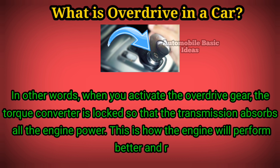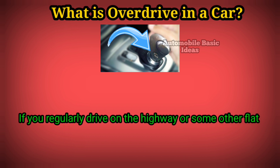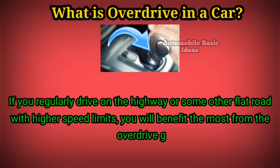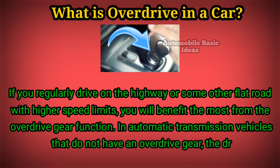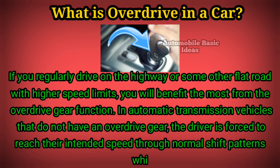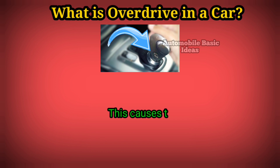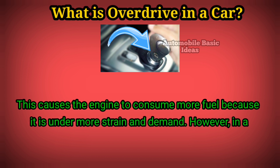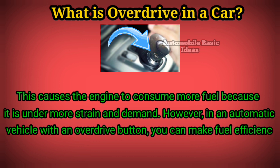When the torque converter is locked and the transmission absorbs all the engine power, the engine will perform better and reduce its fuel consumption. If you regularly drive on the highway or some other flat road with higher speed limits, you will benefit the most from the overdrive gear function. In automatic transmission vehicles that do not have an overdrive gear, the driver is forced to reach their intended speed through normal shift patterns, which focus more on performance rather than fuel economy. This causes the engine to consume more fuel because it is under more strain and demand.